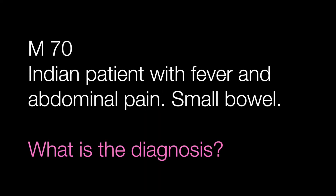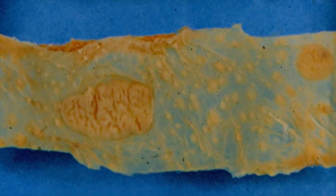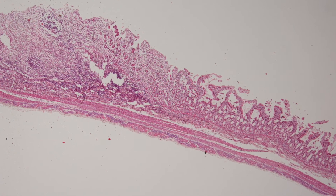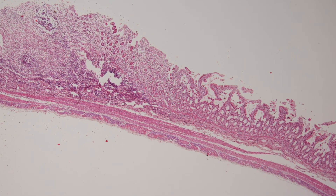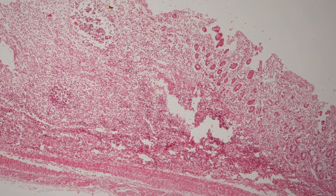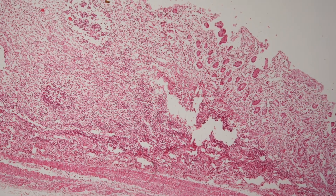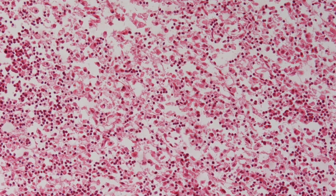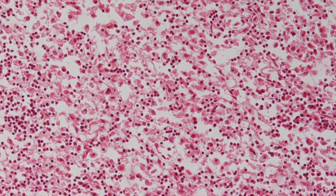Case number four is a segment of small bowel from an Indian male of 70 who presented with fever and abdominal pain. What is the diagnosis? This is the piece of small bowel. This is the histological appearance of the small bowel at a very low power. A higher power view. And this is the inflammatory exudate on the mucosa.